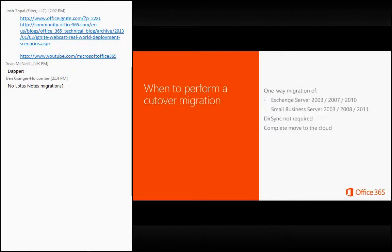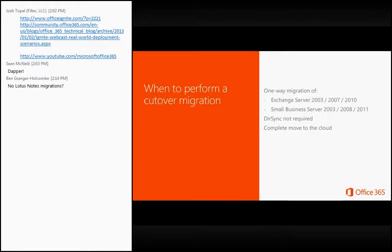Once we connect the Exchange Server to Exchange Online, it starts migrating users and does a mailbox synchronization every 24 hours until the mailbox migration is completed. Not every migration is going to take less than 24 hours, and we also want users to keep using their mailbox while they're live. Because it's not a hybrid or coexistence model, we can't switch people into online mode until everybody is ready. So every 24 hours it syncs everybody's mailbox, so that any changes made locally are synchronized to Exchange Online.